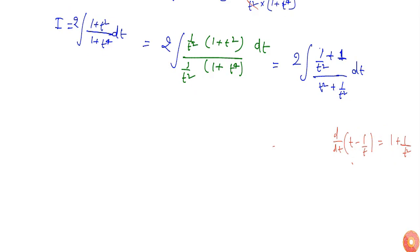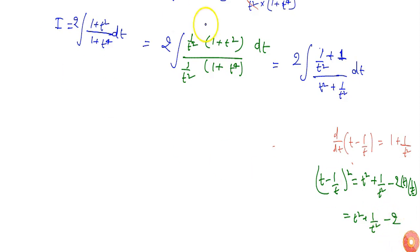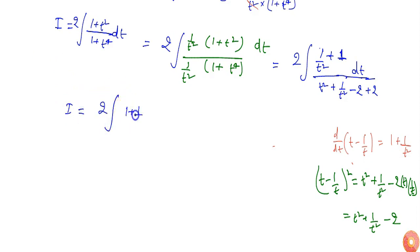In the denominator I have t² plus 1 by t², so I can make a perfect square of t minus 1 by t. Since (t minus 1 by t)² equals t² plus 1 by t² minus 2, to make the perfect square of t minus 1 by t I need t² plus 1 by t², which is given in the denominator, and I need to add minus 2, so I also add plus 2 so that the integration doesn't change. So our integration becomes 2 times (1 plus 1 by t²) by (t minus 1 by t)² plus 2 dt.